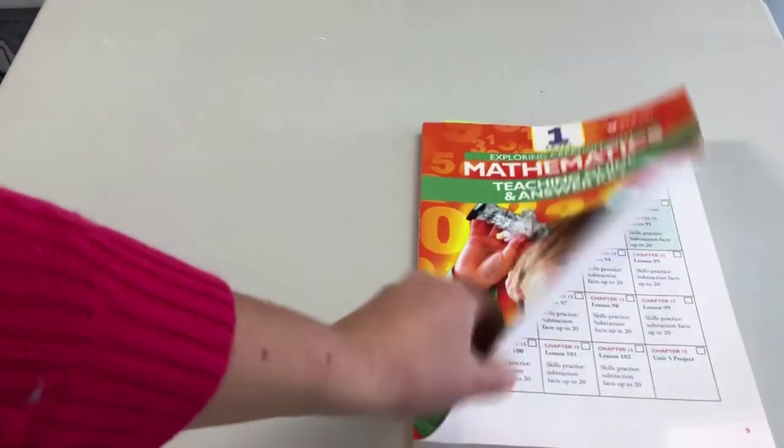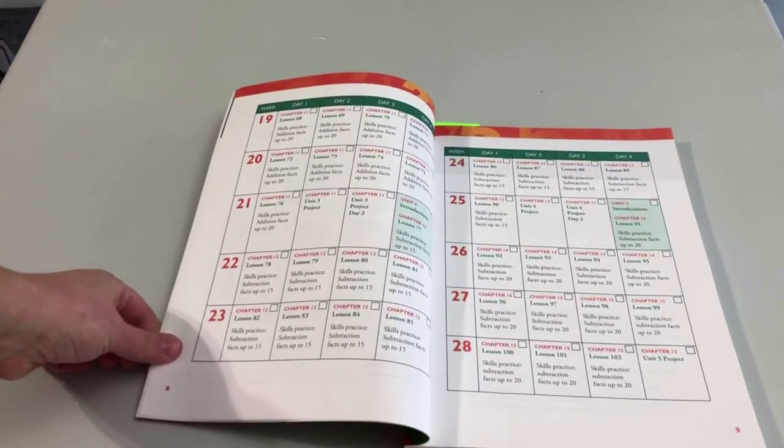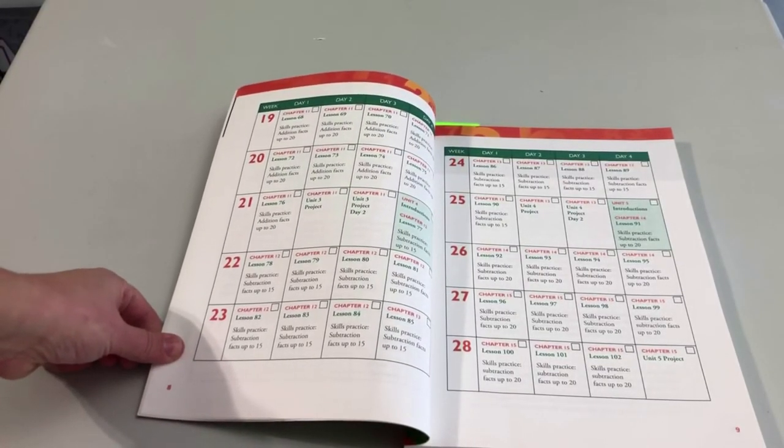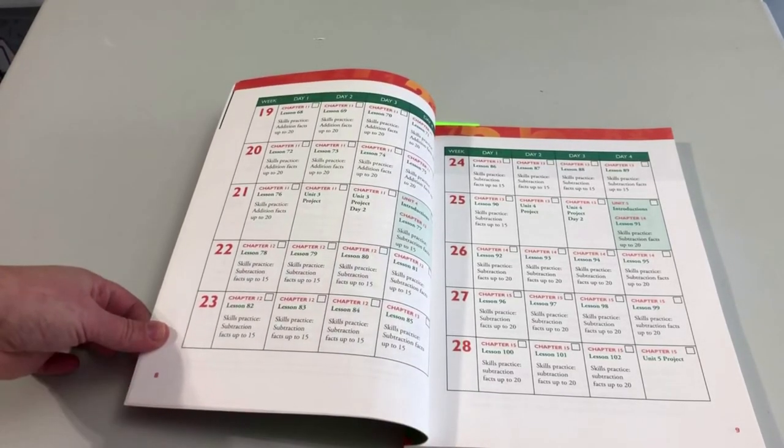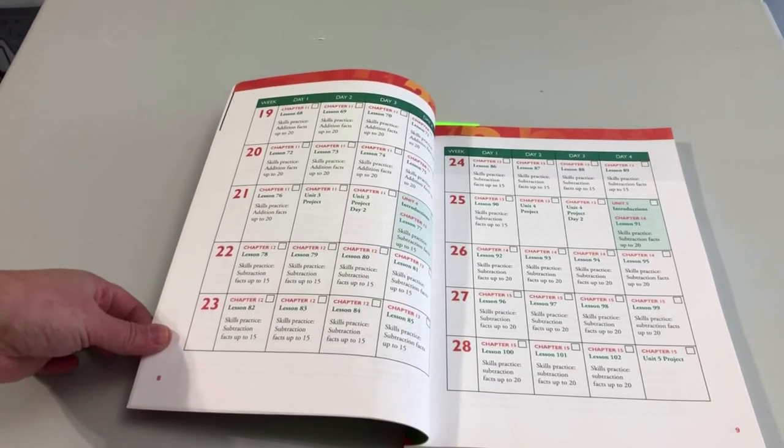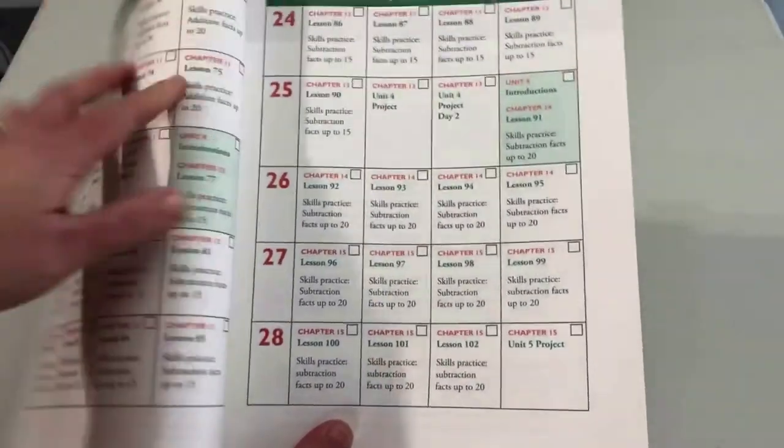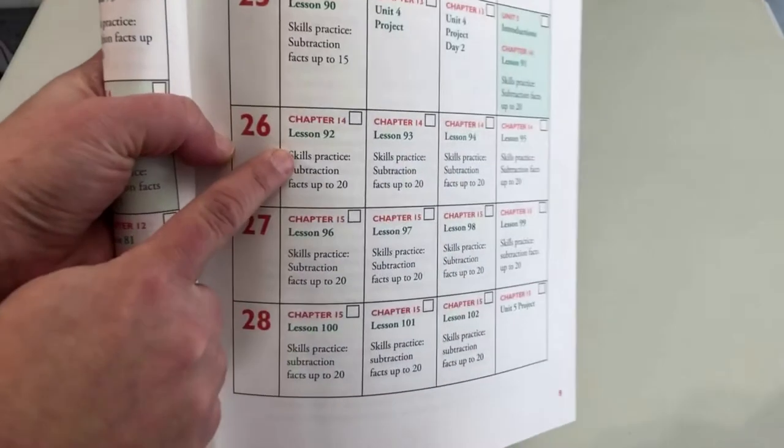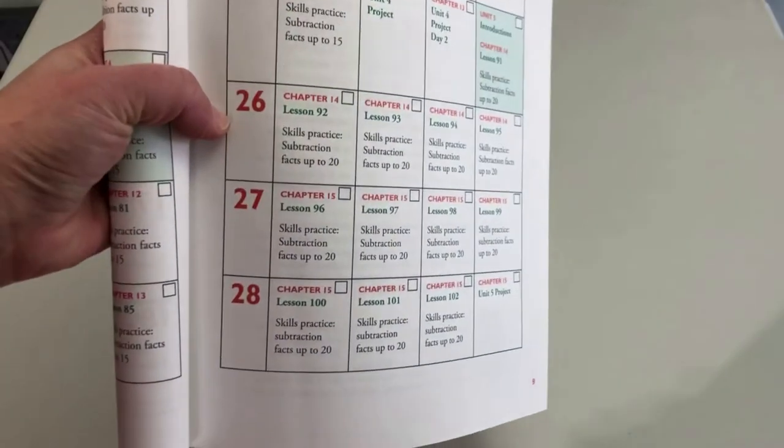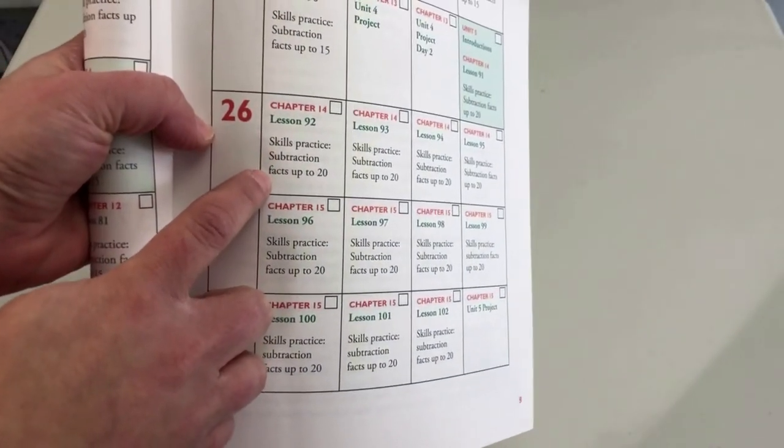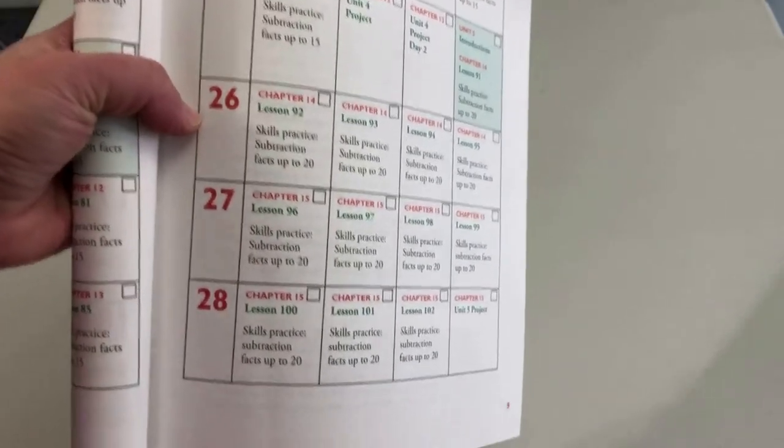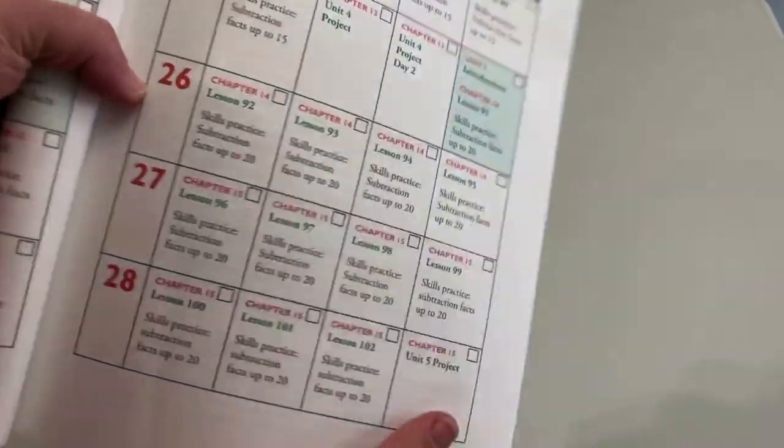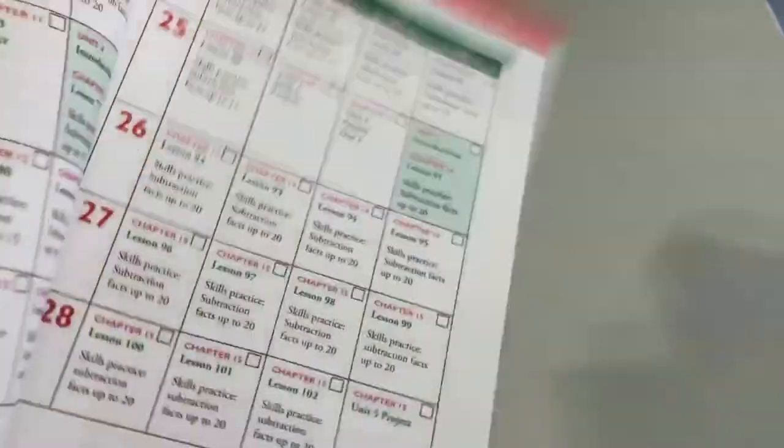How I incorporated that for you and sort of took that upon myself to plan in spaced repetition is I looked at all the facts that they really needed to know, that they really needed to be fluent in. I grouped them and spread them out on the schedule in something called the Skills Practice. So each week there'll be a certain skill that they're practicing—it's pretty narrow, right? Subtracting facts up to 20, that type of thing—not a huge amount of facts.